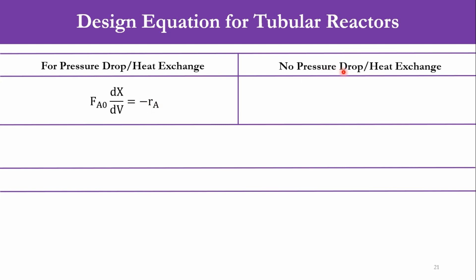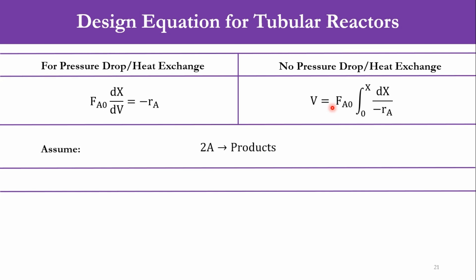We will develop the design equations for tubular reactors under isothermal design. For pressure drop or heat exchange in tubular reactors, we use the equation FA0 dX/dV = −rA, which we already derived in previous chapters. For no pressure drop or no heat exchange, we use the integral form: V = FA0 ∫₀ˣ dX/(−rA). Once there is pressure drop or heat exchange, we use the differential equation; otherwise, we use the integral form.